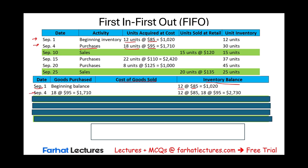Advantages of the weighted average perpetual method: it smooths price fluctuations, simplifies inventory valuation, and provides consistent cost allocation by always using the average. Disadvantages: if prices are fluctuating a lot, the average is less accurate and may not reflect what's happening. This can create potential inventory cost distortion. It's also more complex than the periodic average method, where you only compute the average once at period end rather than continuously.